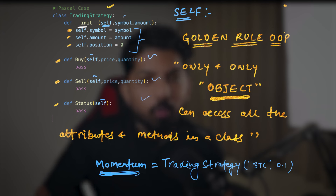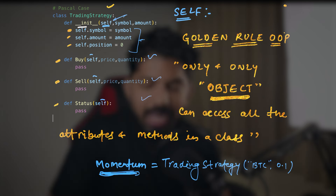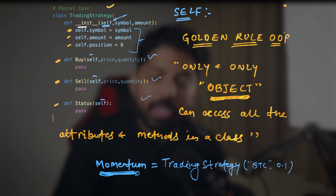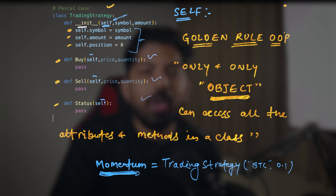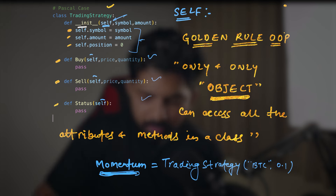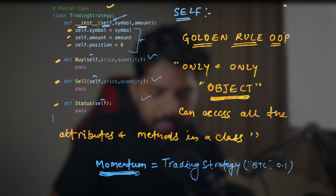With this golden rule, we can infer that 'self' is nothing but the object itself — hiding inside the class with the name 'self'. You can name it anything you want, but 'self' became a convention. This is the object itself, it came inside and it's hiding as 'self'. So 'self.symbol' is momentum's symbol, 'self.amount' is momentum's amount, 'self.position' is momentum's position.